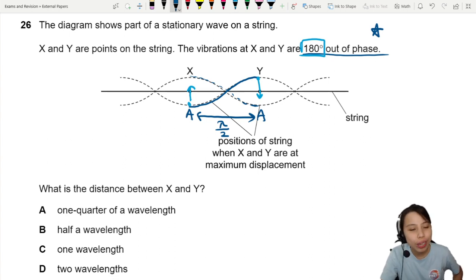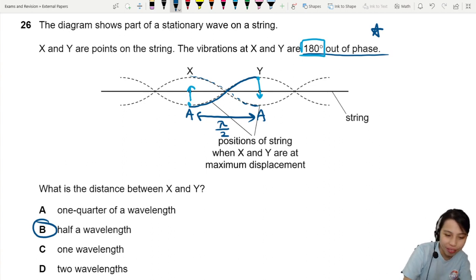But that's not what they're asking. You just need to tell them lambda over 2, which is also known as half a wavelength. It's a bonus question. Make sure you know this fact. Tested very commonly in superposition chapter. Okay, so that's all for this video. See you in the next one.